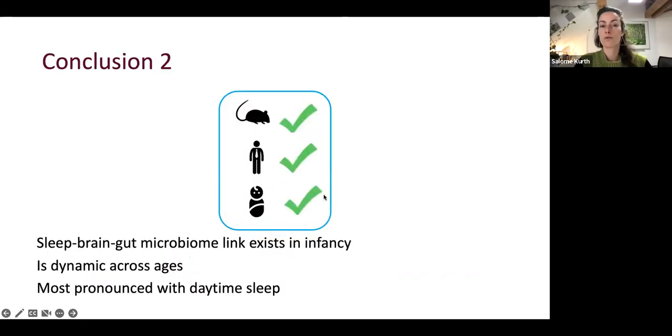Our conclusion for the second part is yes, there is also a sleep-brain-gut connection in infancy. That is not as simple because it's changing across ages, like almost any measure that we're looking at. It is dynamic across ages, meaning that it can give us information about vulnerable transitions of maturation. We do find most relationships with daytime sleep. Daytime sleep seems to be an indicator of how mature somebody's brain is to be connected to other physiological measures of behavior, like behavioral functioning, but also of the microbiome profile in the gut.